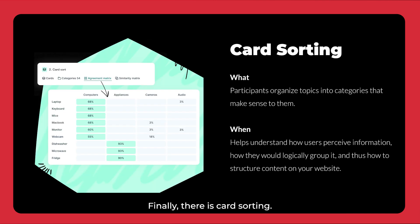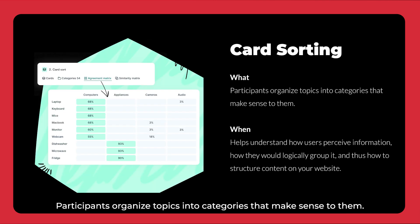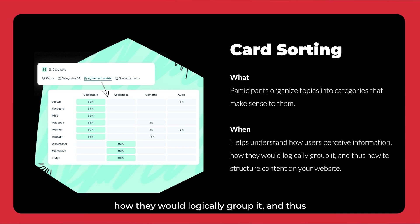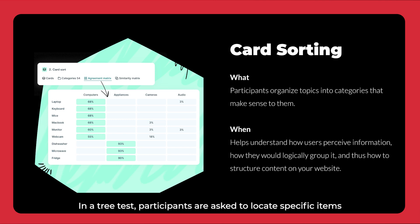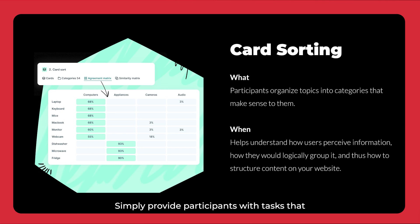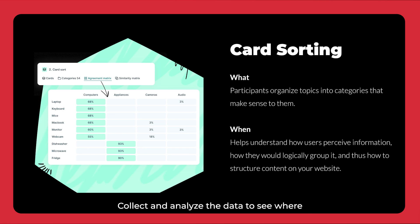Finally, there is card sorting. Participants organize topics into categories that make sense to them. This helps understand how users perceive information, how they would logically group it, and thus how to structure content on your website. The findings could be validated with tree testing, which is the opposite of card sorting. In a tree test, participants are asked to locate specific items within a simplified, text-only version of the website's hierarchy. Simply provide participants with tasks that involve finding specific items within the tree, then collect and analyze the data to see where participants succeed or struggle.